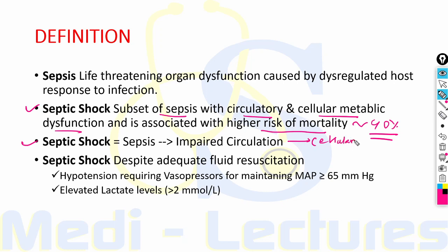This cellular hypoxia leads to anaerobic metabolism. Clinically, septic shock is defined as hypotension requiring vasopressors for maintaining mean arterial pressure of more than 65 mm of mercury despite adequate fluid resuscitation.